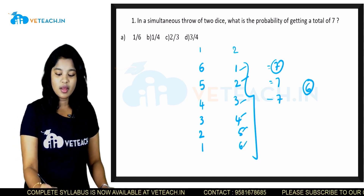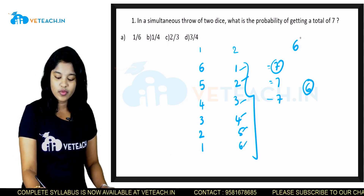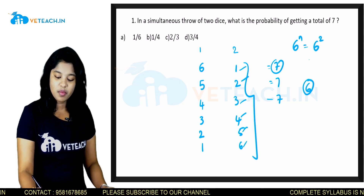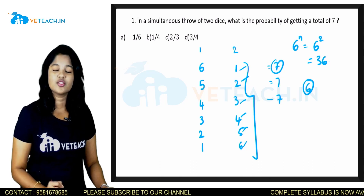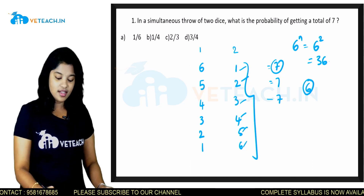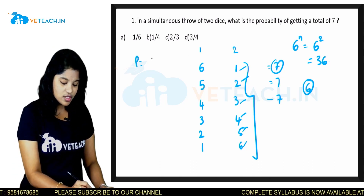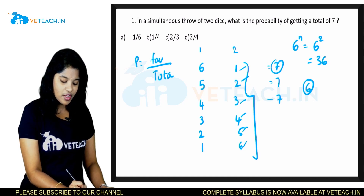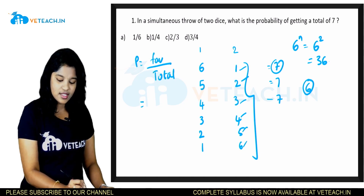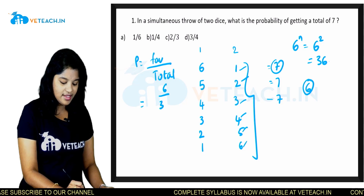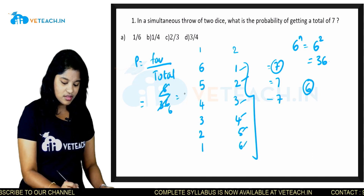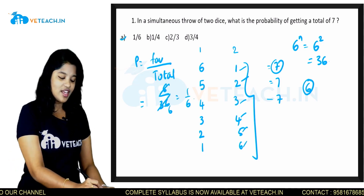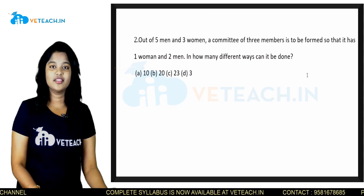When two dice are thrown, the total number of outcomes will be 6 to the power n. Here two dice are thrown, so it is 6² = 36. Probability equals number of favorable events divided by total number of events, that is 6 by 36, which equals 1 by 6. So option A is our correct answer. See the next question.